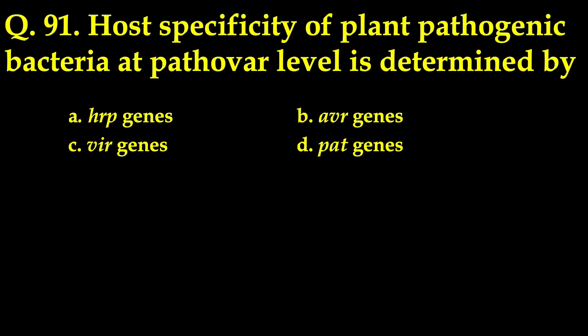The next question: host specificity of plant pathogenic bacteria at pathovar level is determined by — the correct answer is avr genes. Plant bacteria like Xanthomonas species have a wide number of pathovars and the ability to attack numerous agricultural crops. They inject an effector protein, called avr protein, through the type III secretion system into the plant host to elicit disease. This effector protein can confer pathogenicity and dictate host specificity.